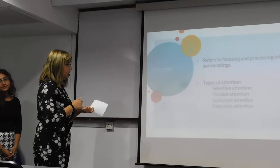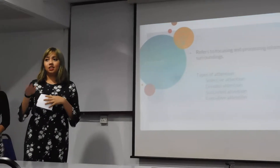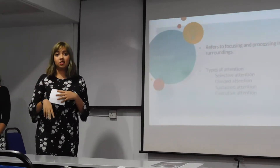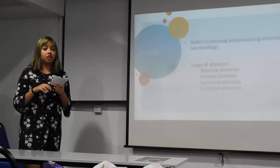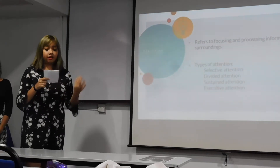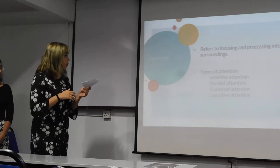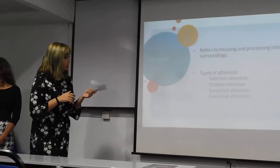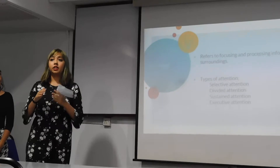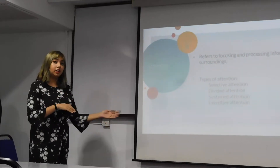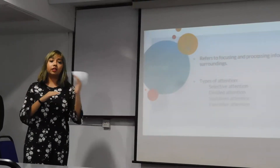The second type is divided attention, where a person tries to pay attention to multiple things at once. For sustained attention, a person is able to concentrate on a certain task, event, or feature in our environment for a long period of time. And the last one is executive attention, where a person is able to block out unimportant events and focus on what is actually more important to them and take that as their priority.